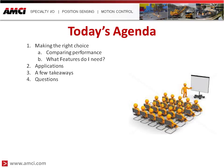Today's agenda will start with how do we make the right choice — first and foremost comparing performance, specifically the speed-torque curves of both a stepper and a servo. Then we'll look at how to make the right choice when looking at features, including closed loop for a servo or open loop for a stepper. We'll also review a couple of applications, go through their feature requirements, and make decisions on which motion control solution is the right choice. Then we'll look at a few takeaways and answer any questions at that time.